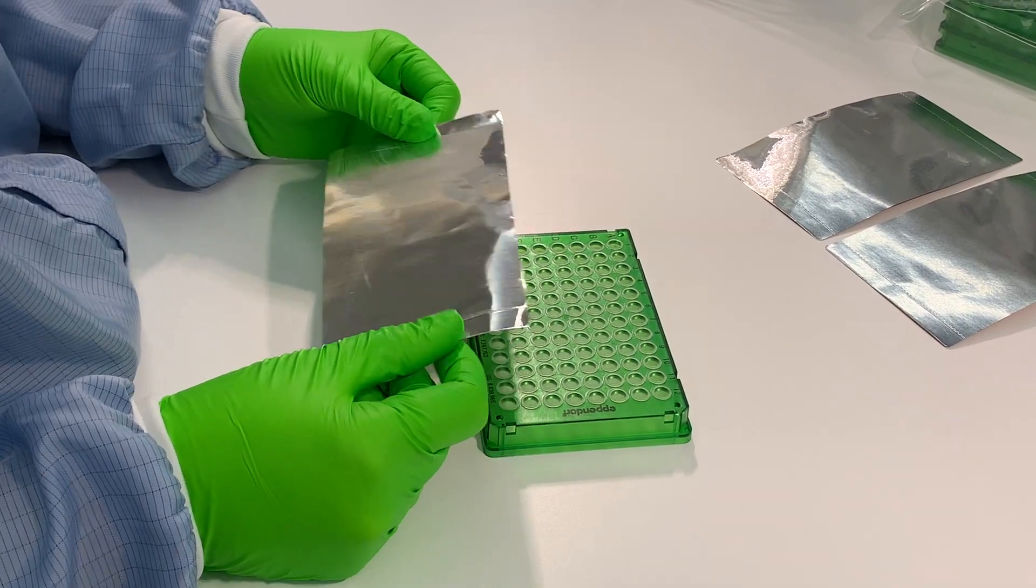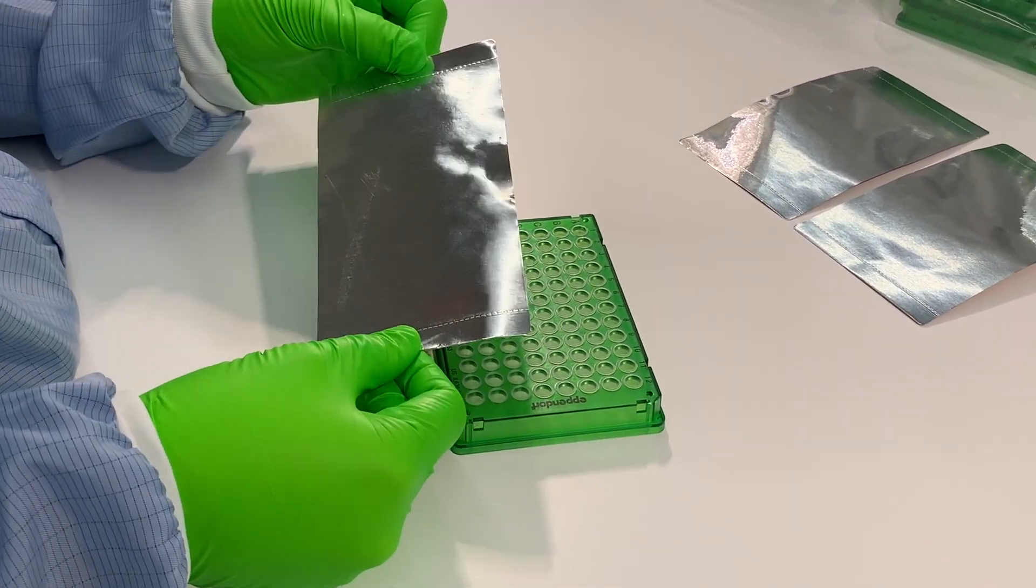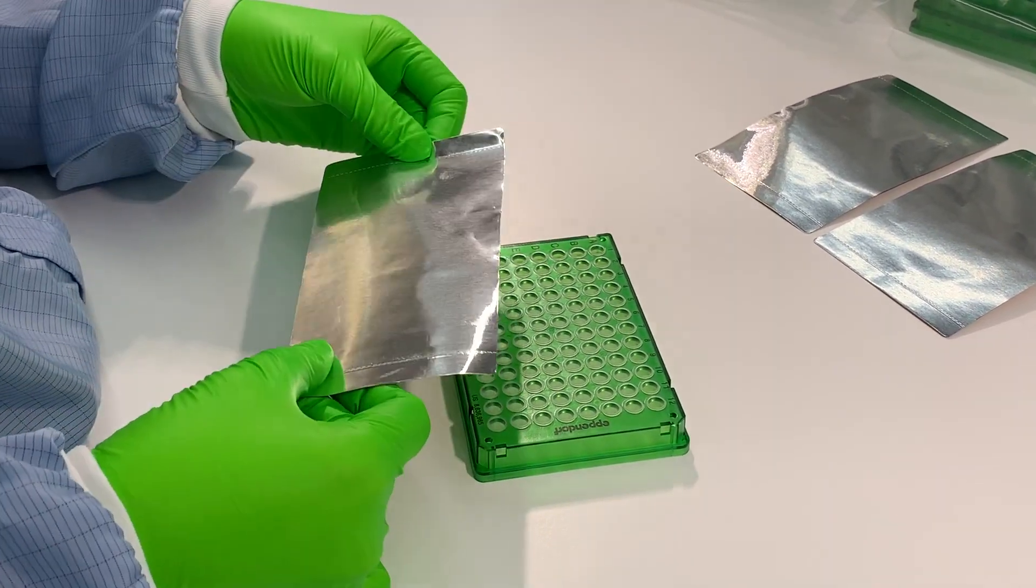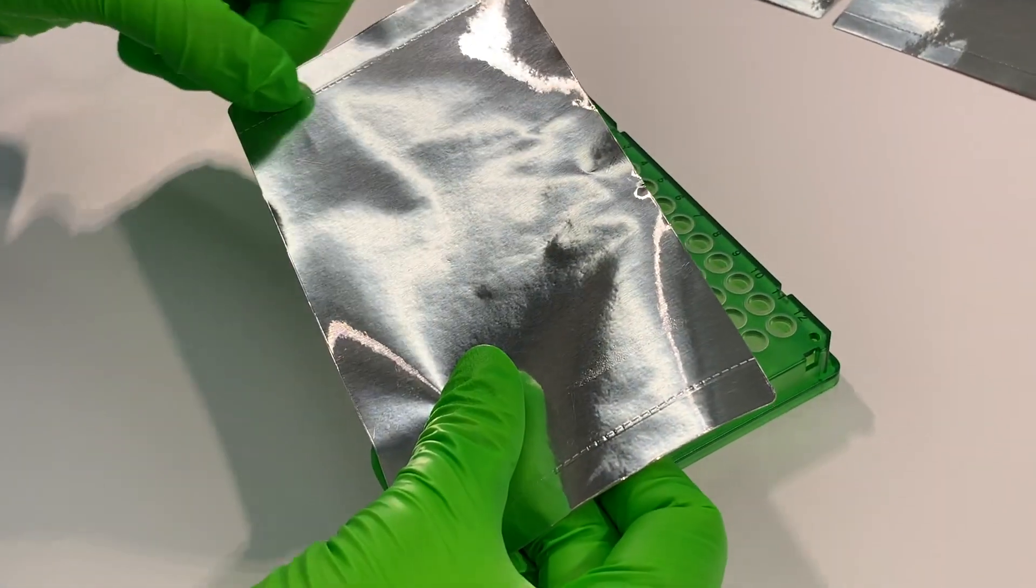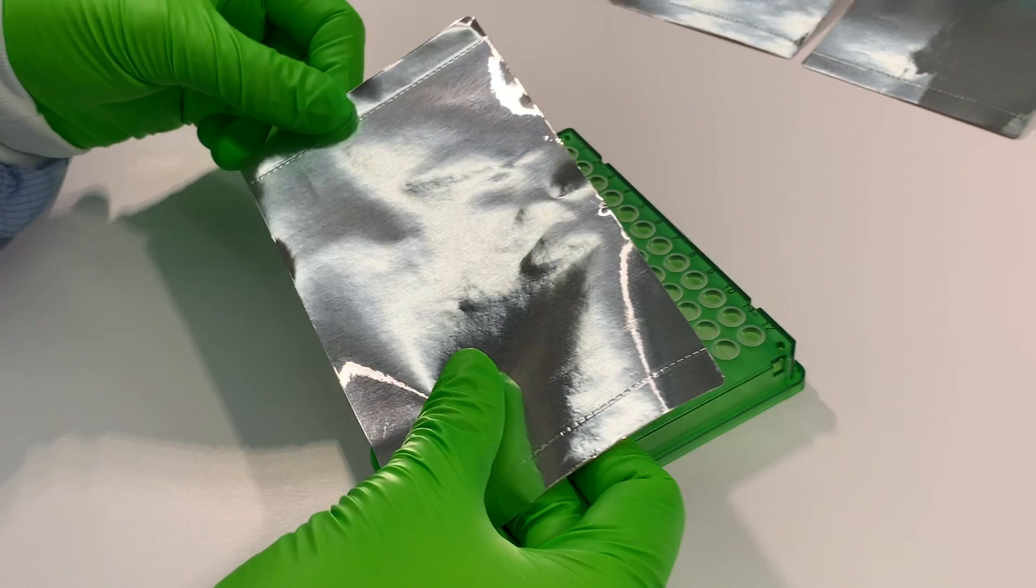The aluminum seals you get together with your plates are covered in the back with a brown protective paper. On either side of the seal, there is a perforation which will help to remove the protective paper and will leave non-sticky wings once the plate is sealed.